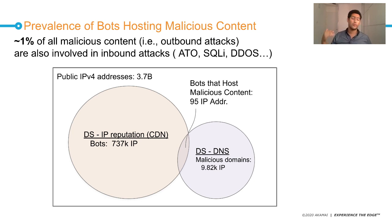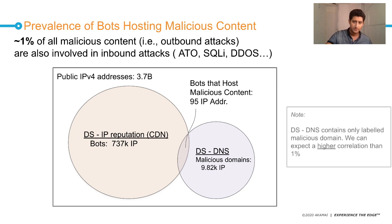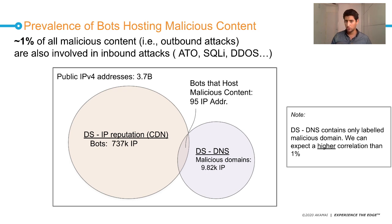So when you browse a phishing website, there is a 1-in-100 chance you are on the same machine as an SQL injection attack, for example. Just a small remark: we used only labeled data to avoid mistakes. We get 1%, but in the wild we expect a higher correlation — perhaps 2–3% intersection.